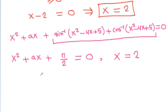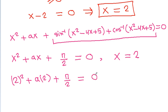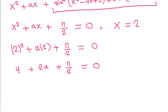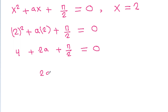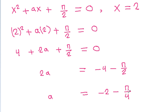We substitute x = 2 into the equation: 2² - a(2) - π/2 = 0, giving 4 - 2a - π/2 = 0. Solving, 2a = 4 - π/2, so a = 2 - π/4. Therefore, a = 2 - π/4 is the required value of a.